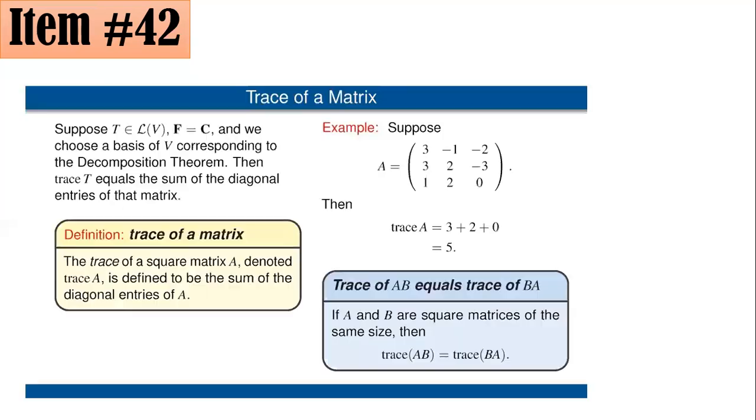The correct answer here is trace. In fact, the trace of a square matrix A, denoted by trace of A, is defined to be the sum of the diagonal entries of A. For example, if I have here this matrix A, the main diagonal is from the upper left to the bottom right. So we have 3, 2, and 0. That's why the trace of A is 3 plus 2 plus 0 or 5.